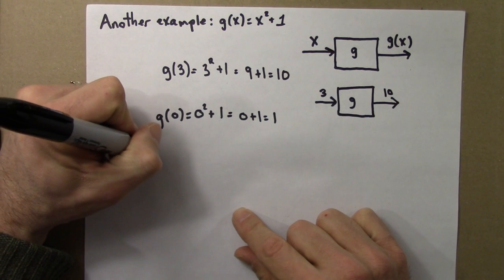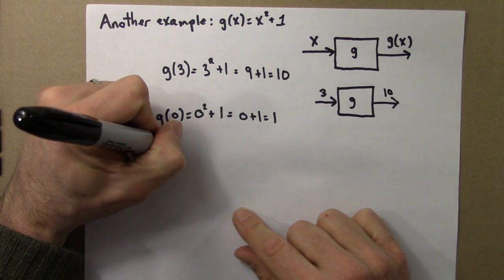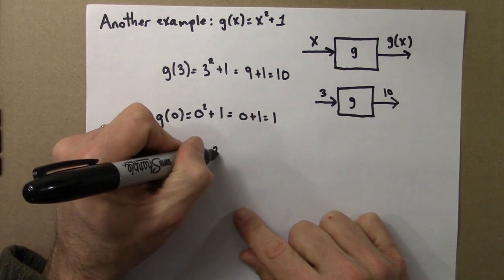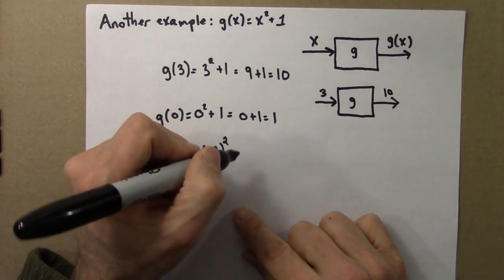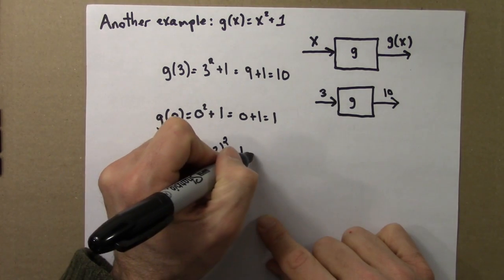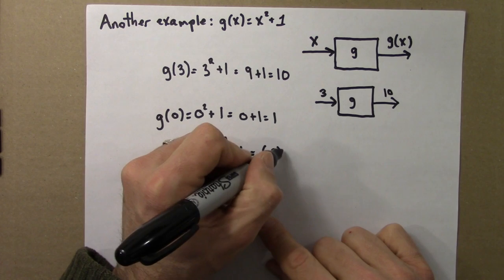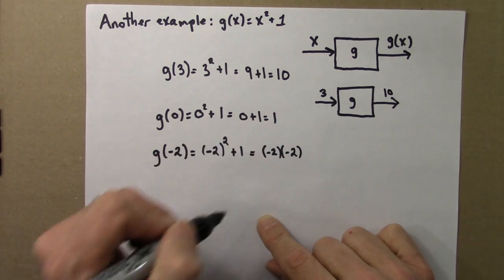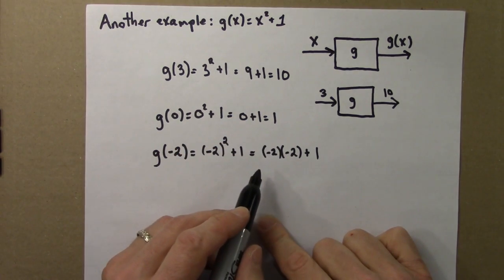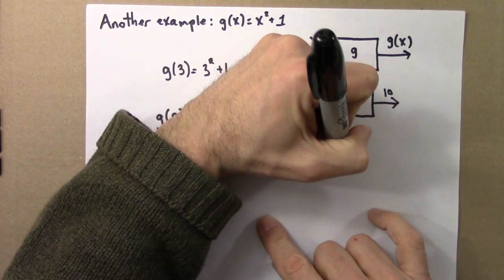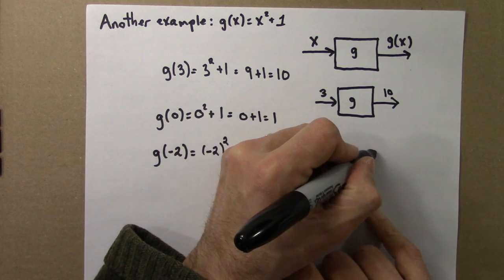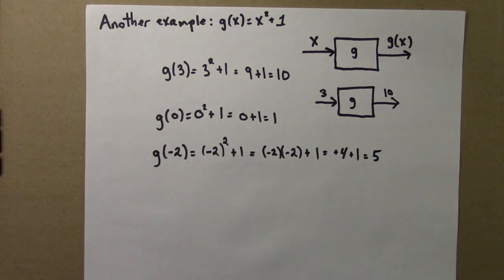Let's do one more. Let's try a negative number now. So our input is negative 2. That means we would take negative 2, square it and add 1. Negative 2 squared, well that's negative 2 times negative 2. Negative 2 times negative 2. The negatives cancel. That would be plus 4, plus 1. So that would be 5.